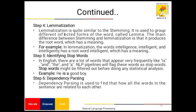Step four is lemmatization, which is quite similar to stemming. It is used to group the different inflected forms of a word, called a lemma. The main difference between stemming and lemmatization is that lemmatization produces a root word which has a meaning. For example, the words 'intelligence,' 'intelligent,' and 'intelligently' share the root word 'intelligent,' which has a meaning.